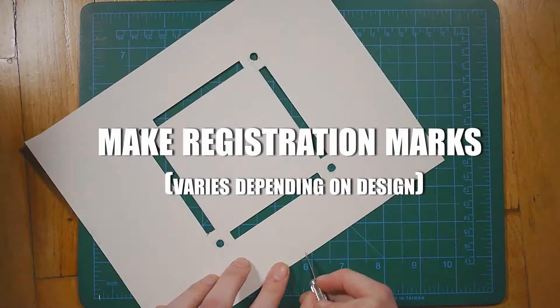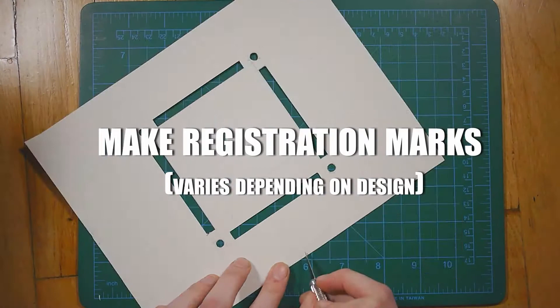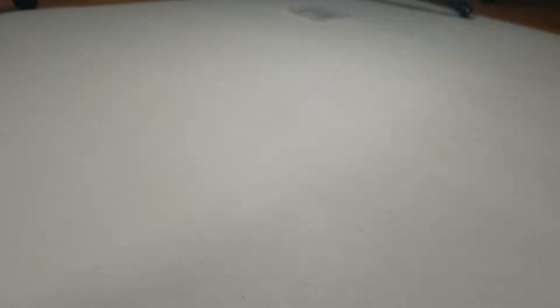Once your pattern has been cut out, you have to make registration marks. Registration marks are basically any mark that will help you keep your design centered and repeat the design accurately.